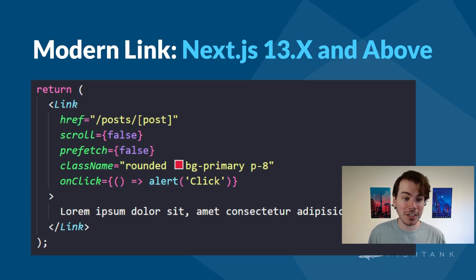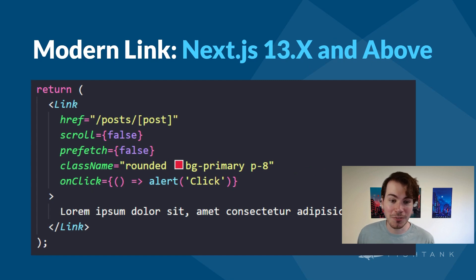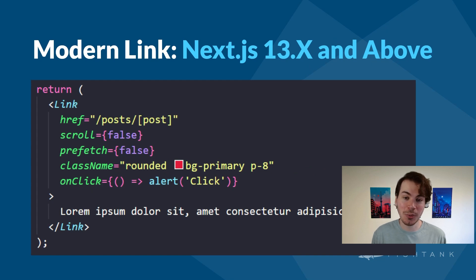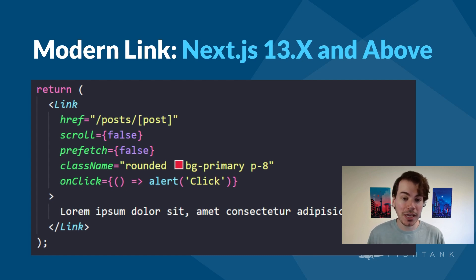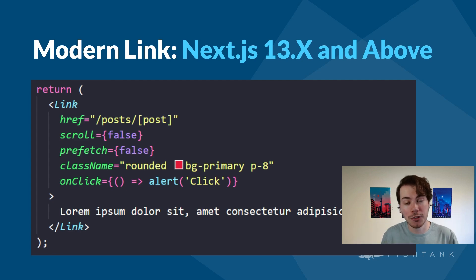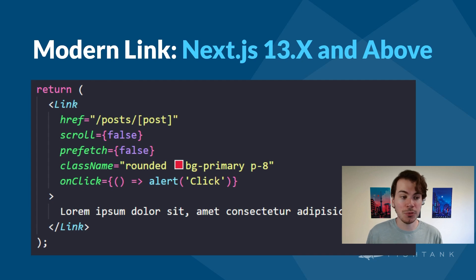Talking about Next.js 13 and above, we have the modern Next.js Link. There was nothing more fun than spending hours going through my project upgrading my Next.js 12 links to Next.js 13 links. But this is the current link used by Next.js and Sitecore JSS. The main difference between the two is the removal of that nested anchor tag and the requirement to use passHref — this is no longer needed. Now you can just put all the attributes you want directly onto the link tag itself.